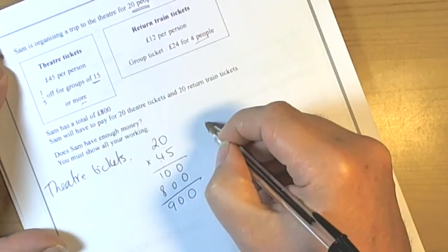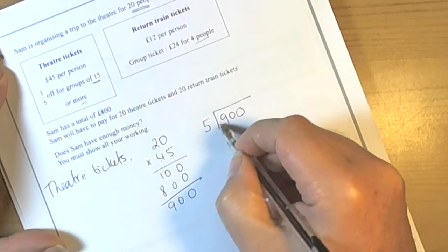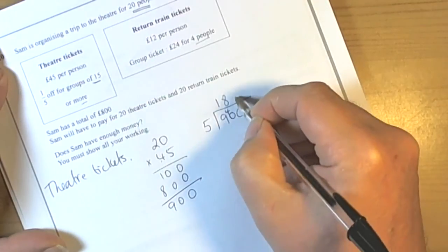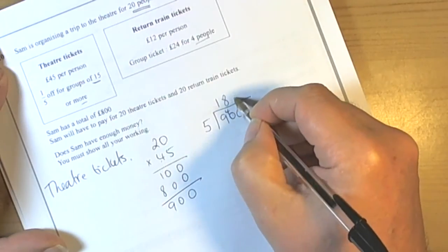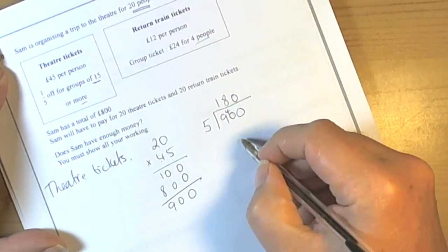But they give a fifth off, so 5s into 900, 5 into 9 is 1, carry 4, 5 into 40 is 8, and 5 into 0, there's no remainder there, so 5 into 0 is 0. So we're going to get 180 pounds off.